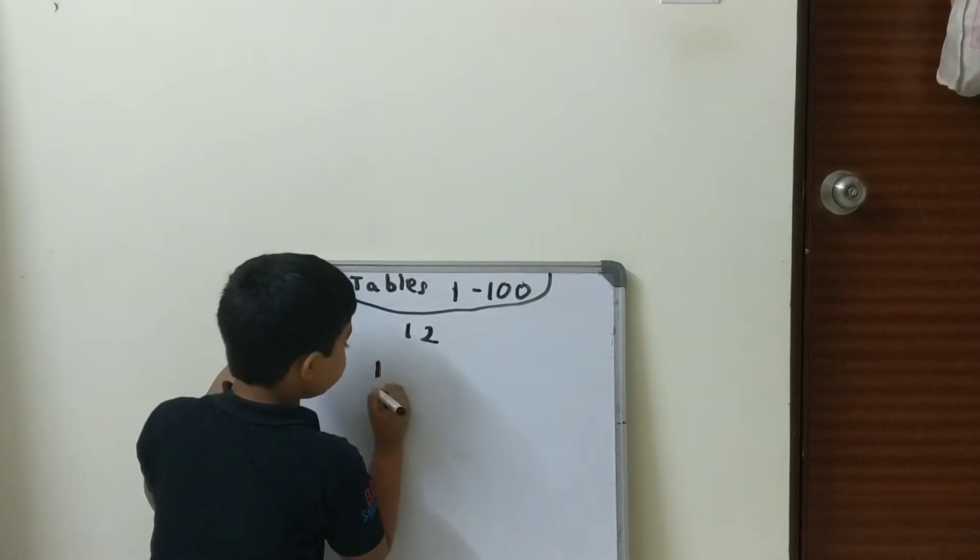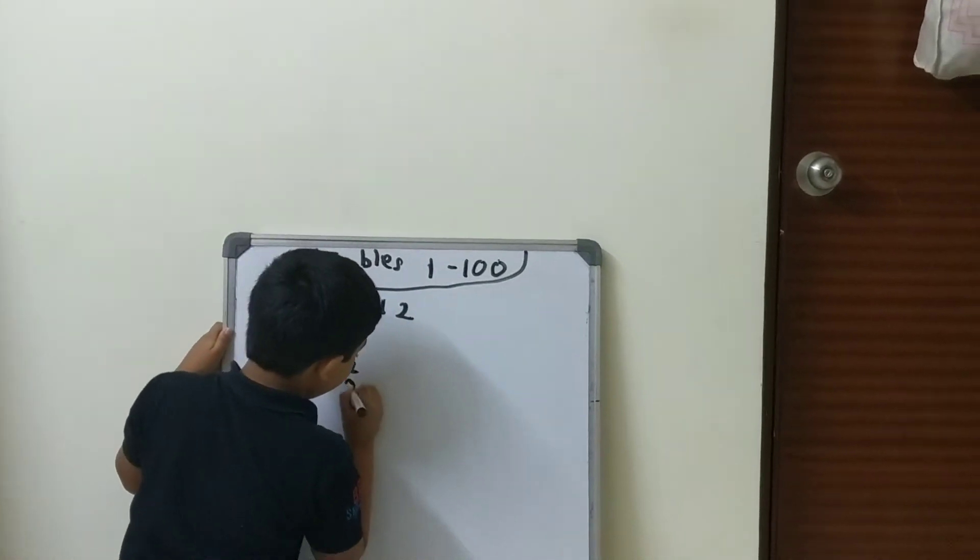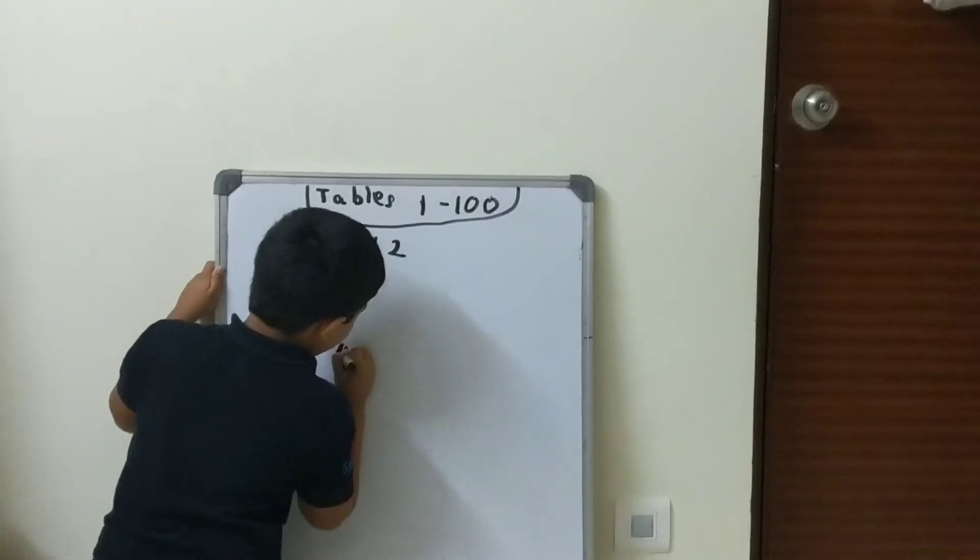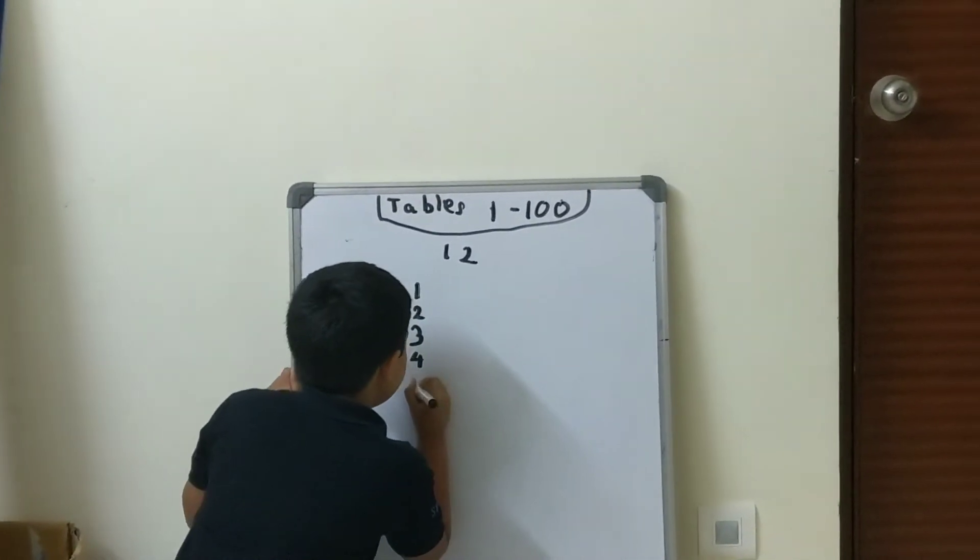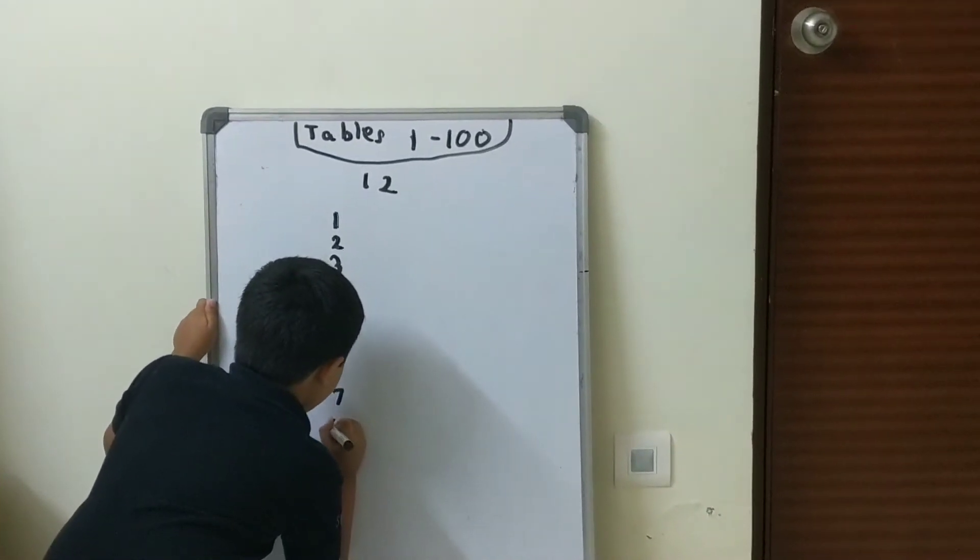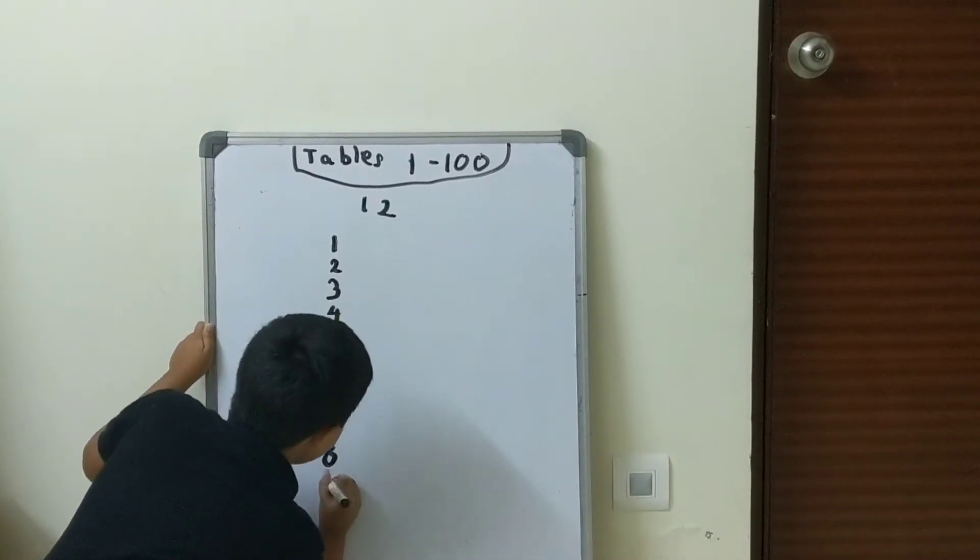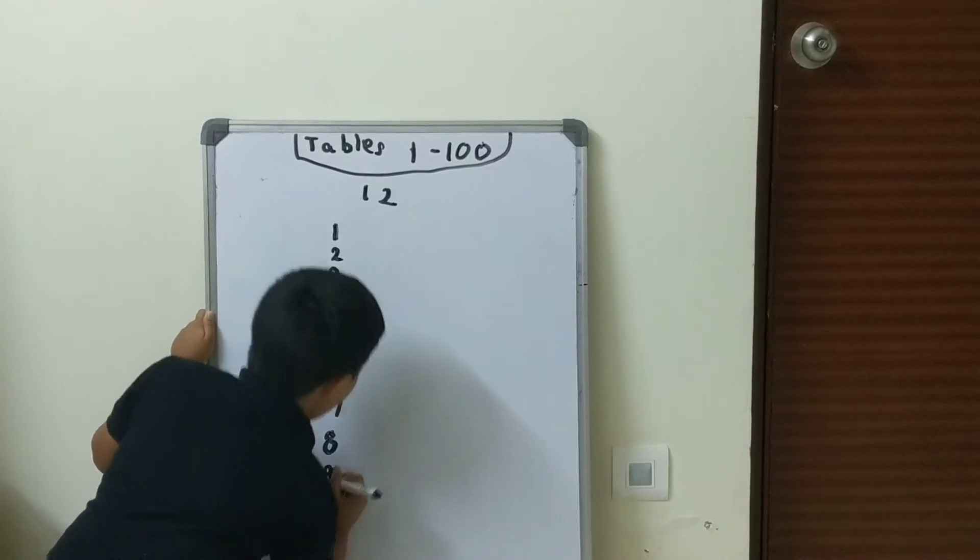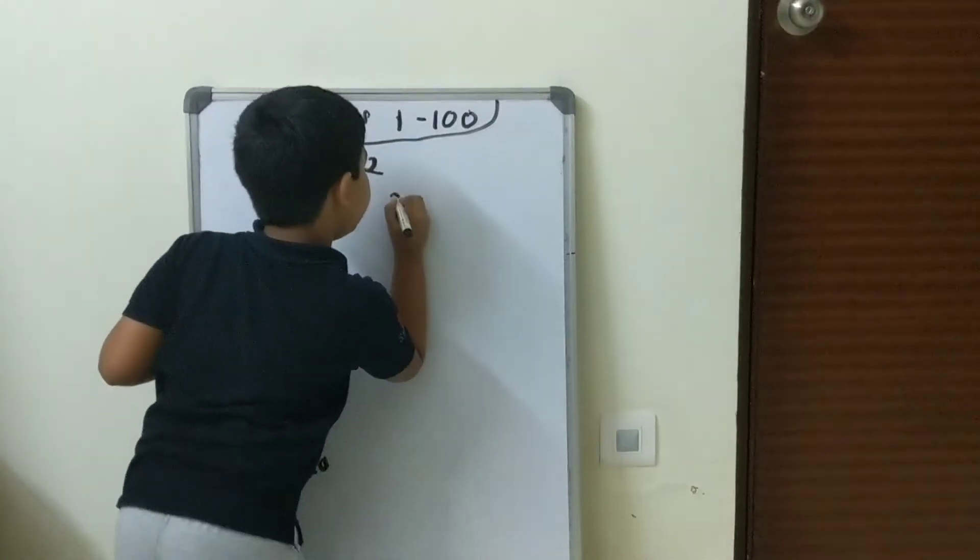1, 2, 3, 4, 5, 6, 7, 8, 9, 10. And now the 2 times table.